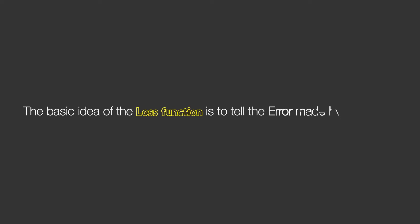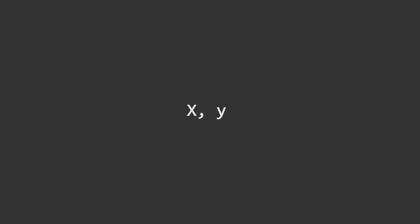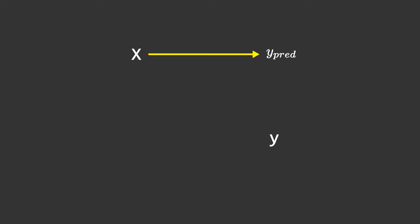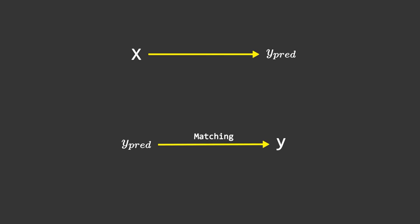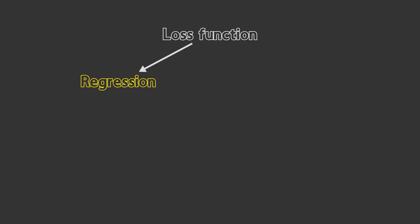The basic idea of the loss function is to tell the error made by our model, and that's why it is also known as an error function. The basic idea of any deep learning model is that we give x and y as input. The x is used to calculate y-hat, and then we take this y-hat and match it with y, which is the actual output. By matching this we can tell how much error is made by our algorithm, and this matching is done by our loss function. There are two types of loss functions: one used for regression and one for classification.